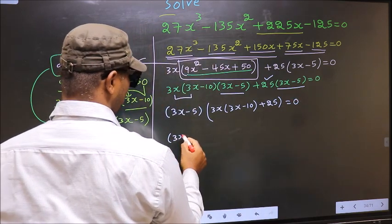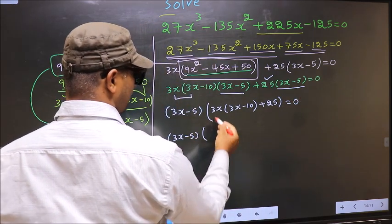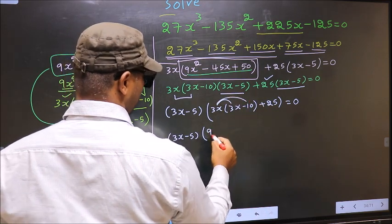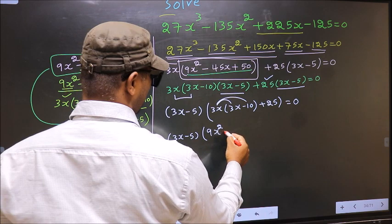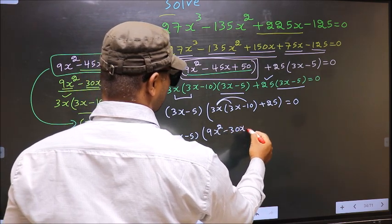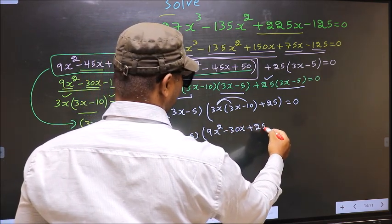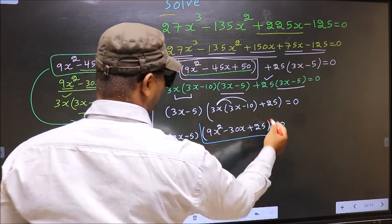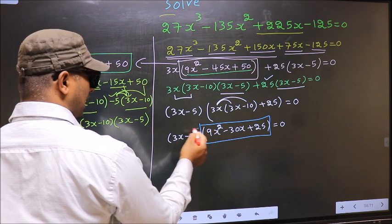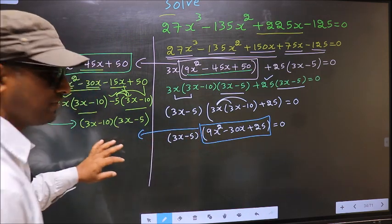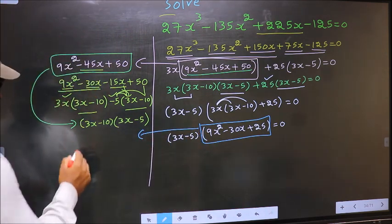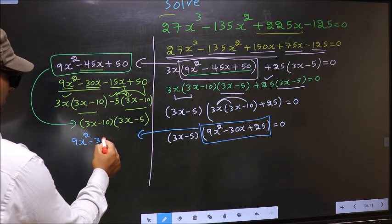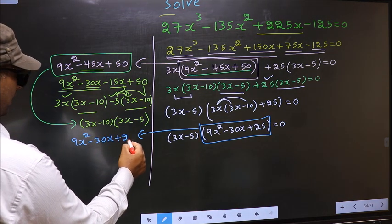Now, 3x minus 5 — over here you open up the brackets in this way. You get 9x² minus 30x plus 25, equal to 0. Now we have a new quadratic. I will factorize this quadratic here. That is 9x² minus 30x plus 25.